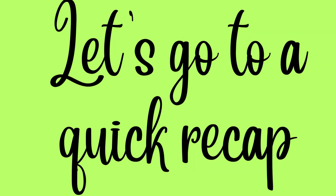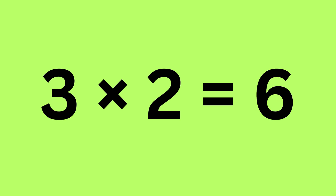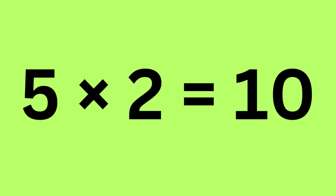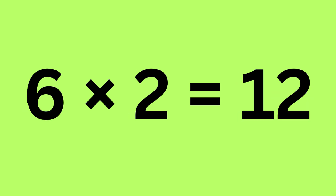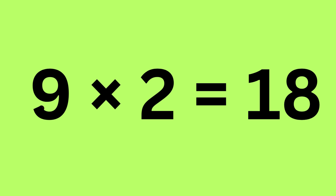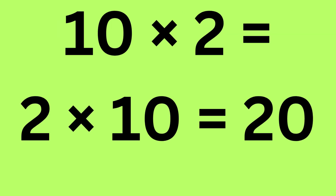Let's do a quick recap: 1 times 2 is 2, 2 times 2 is 4, 3 times 2 is 6 — are you ready for more? 4 times 2 is 8, 5 times 2 is 10, 6 times 2 is 12 — we are now all done. 7 times 2 is 14, 8 times 2 is 16, 9 times 2 is 18. But why should we stop now? Let's reach the top — 10 times 2 is 20.